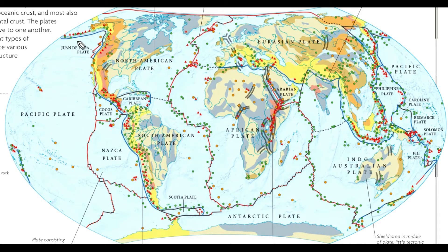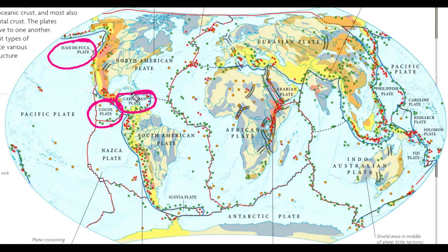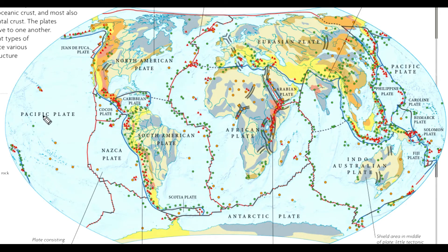There are other minor plates. For example, the Juan de Fuca plate is in the Gulf of Alaska. The Coco's plate is between Latin America. Then there is the Caribbean plate. The Scotia plate is between the South American plate and the Antarctic plate.